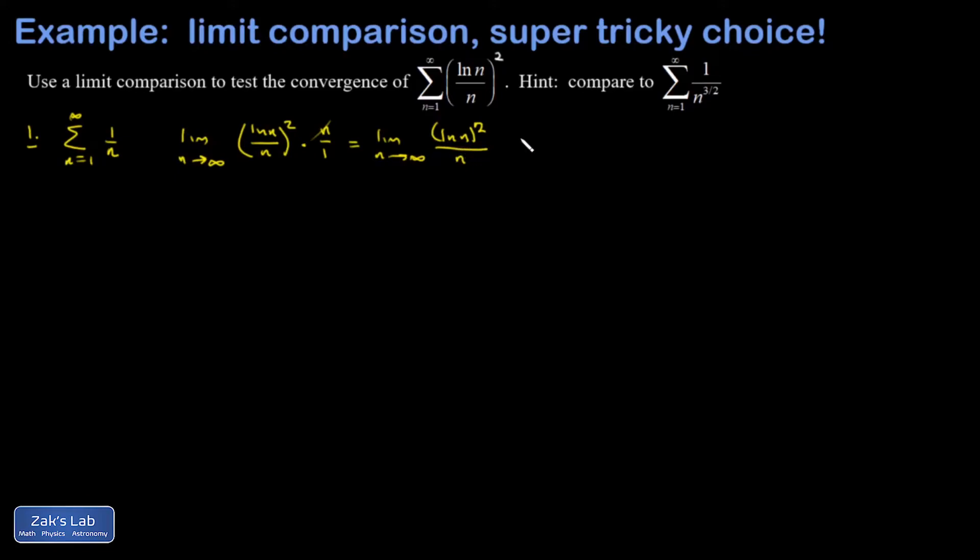Okay, that's like an infinity over infinity indeterminate form. So we're going to use L'Hopital's rule for this. And I want to be careful not to say that L'Hopital's rule applies to a discrete sequence that's being evaluated at integer values of n.